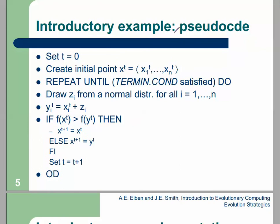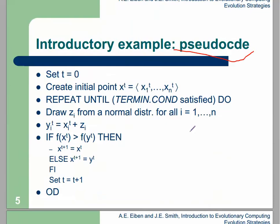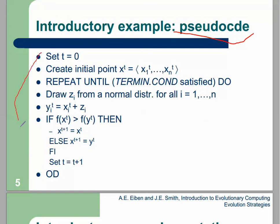As you can see in the pseudo-code of ES, it is mentioned that population size is one, but this does not exist in all types of ES. Sometimes we must select more than one element for population size. Here you can see the pseudo-code of ES with one population — at the beginning we have one solution with N genes or N real values.